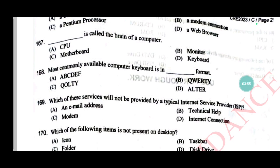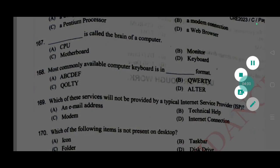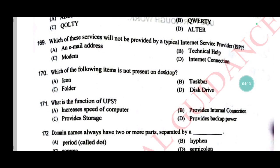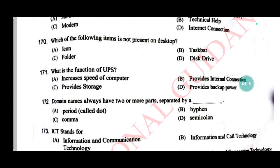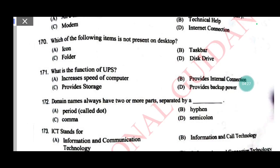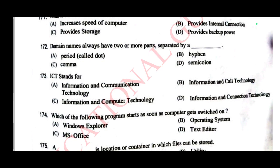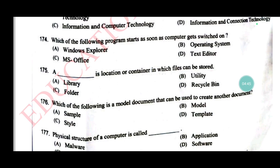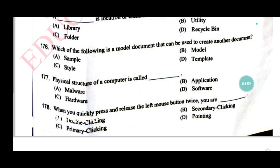Which service will not be provided by a typical internet service provider (ISP)? Answer A. Which of the following items is not present on the desktop? Answer D: stripe. Which UPS function is to provide backup power? Domain names always have two or more parts separated by — answer A. ICT stands for Information and Communication Technology, answer A. Which program starts as soon as the computer is switched on? Answer B: operating system. What is the location or container in which files are stored? Answer C. Which of the following is a model document used to create another document? Answer D: template. The physical structure of a computer is called — answer C: hardware.